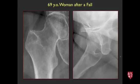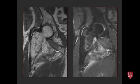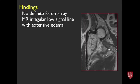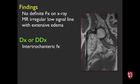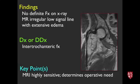Next case, 69-year-old patient with pain after a fall. Radiographs show no definite fracture. MRI — proton density weighted — shows an irregular low-signal line: an intertrochanteric fracture, radiographically occult or very subtle. MRI is very sensitive for these fractures even in the acute setting and helps determine whether the patient needs surgery by showing whether the fracture extends all the way across the femur or is isolated to the trochanter.